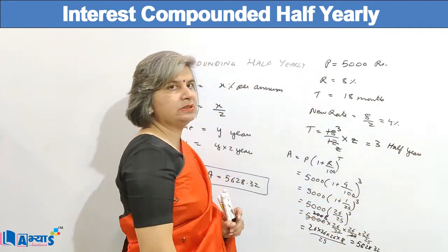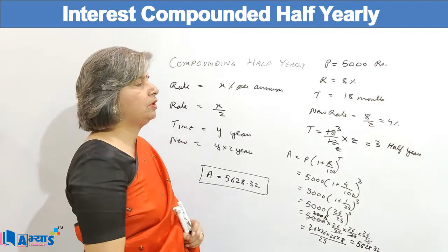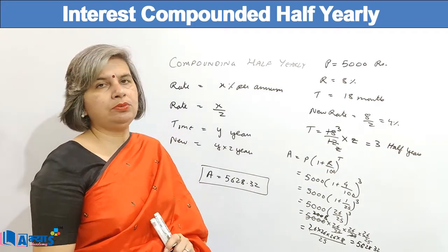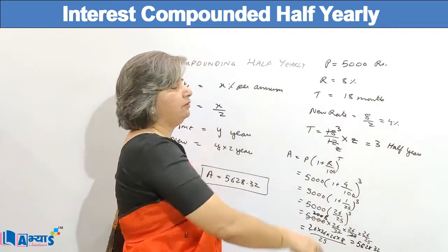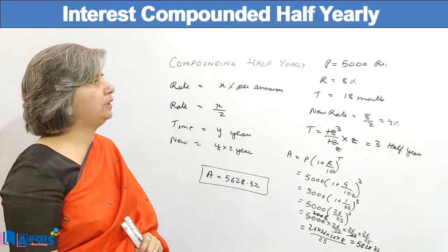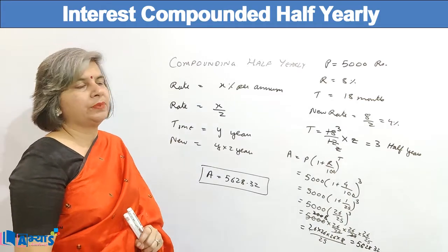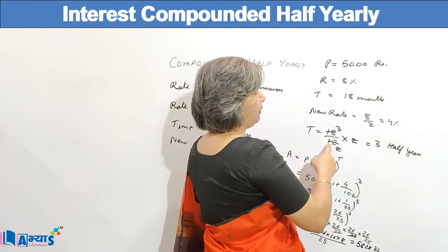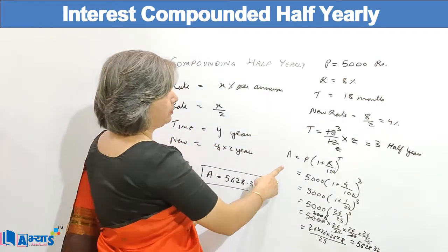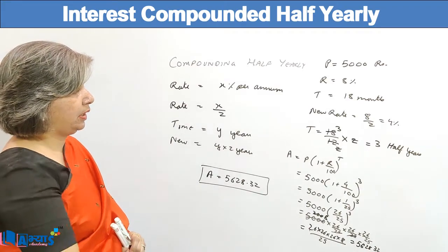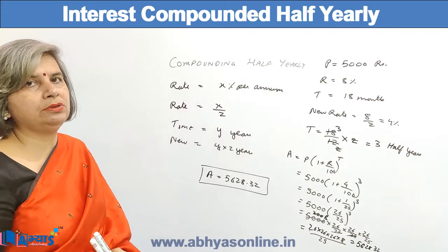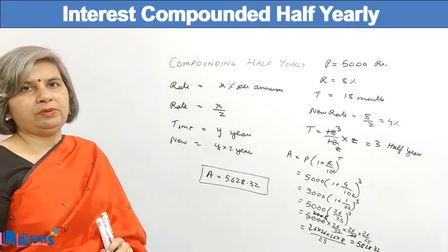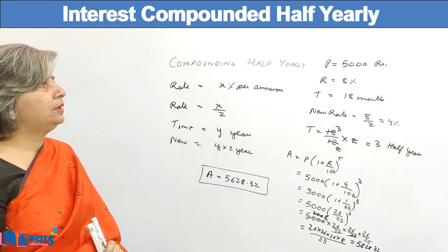For example, if the principal is 5000, rate is 8 percent, and time is 18 months, compounded half yearly: the new rate is 8 by 2, which is 4 percent. Converting 18 months into years gives 18/12, and multiplying by 2 gives 3 half years. Using the formula A = P × (1 + R/100)^T, the answer comes out to 5628.32. This is the amount when 5000 is deposited at 8 percent per annum compounded half yearly for 18 months.